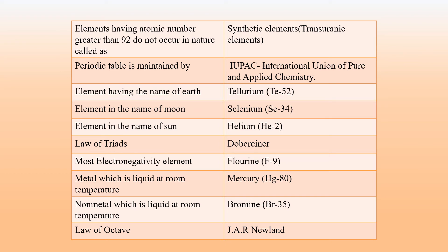The Law of Triads was proposed by Dobereiner. The Law of Triads is basically putting three elements in order of atomic weight in a logical order by their physical properties.